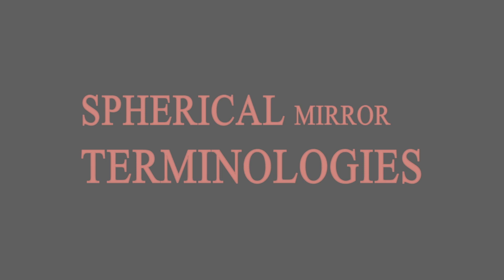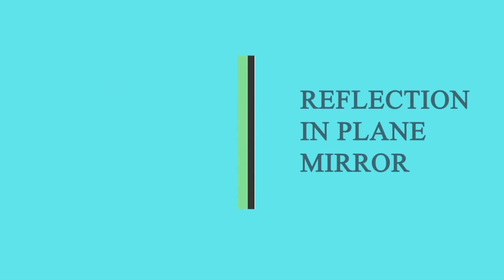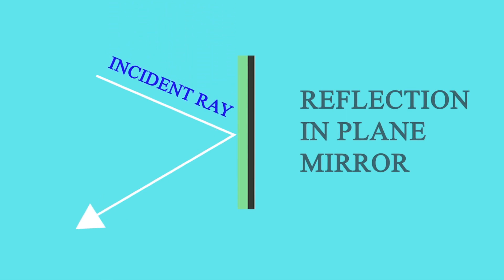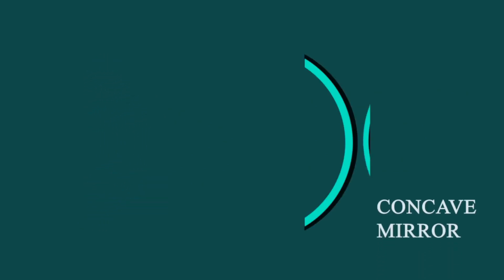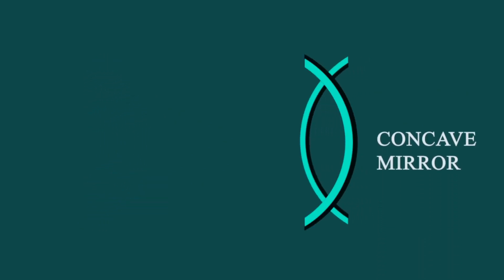We have already learned plane mirror and its reflection. The reflection happens like this: this is the incident ray, this is the reflected ray, and this line is the normal. As per the laws of reflection, the angle of incidence and angle of reflection are the same. Now we'll look at a concave mirror and a convex mirror.